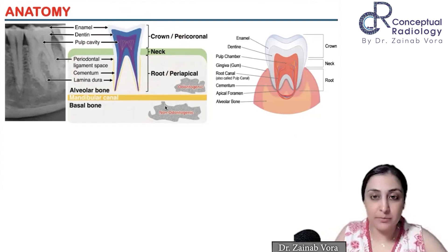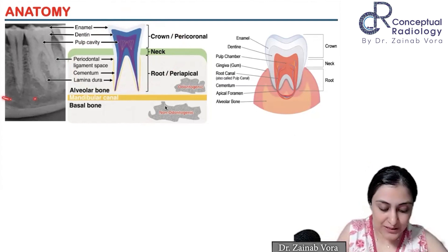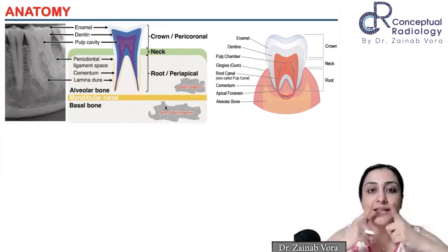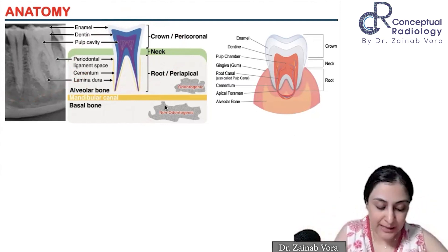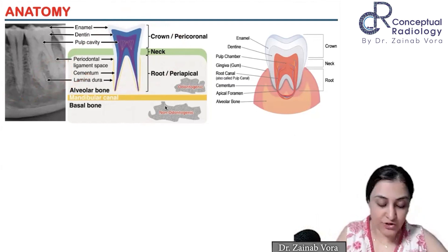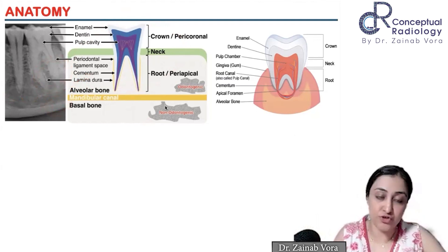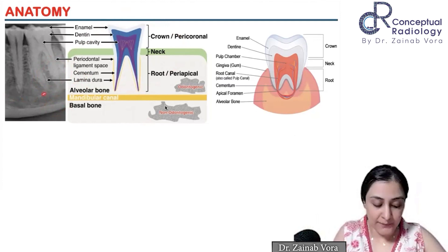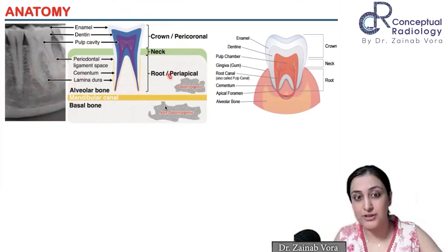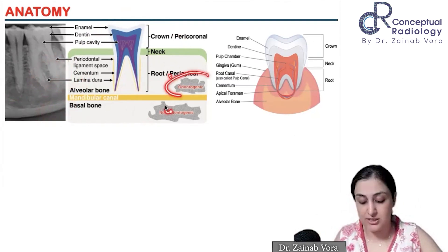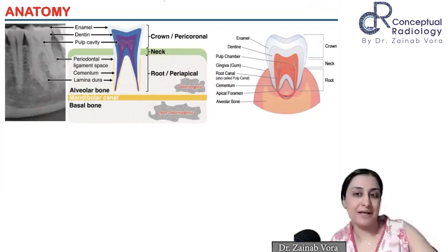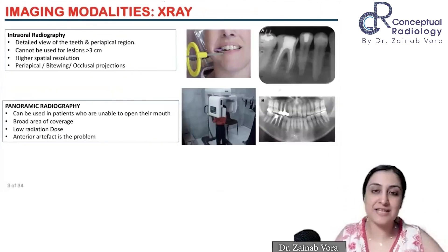We use the inferior alveolar canal as a surrogate marker. The inferior alveolar nerve runs here and opens through the mental foramen. Above the inferior alveolar canal is going to be odontogenic; below it is non-odontogenic. That's the question we answer. Once we've established it's odontogenic, the next question is: is it pericoronal or periapical? That's the very basics of the approach.